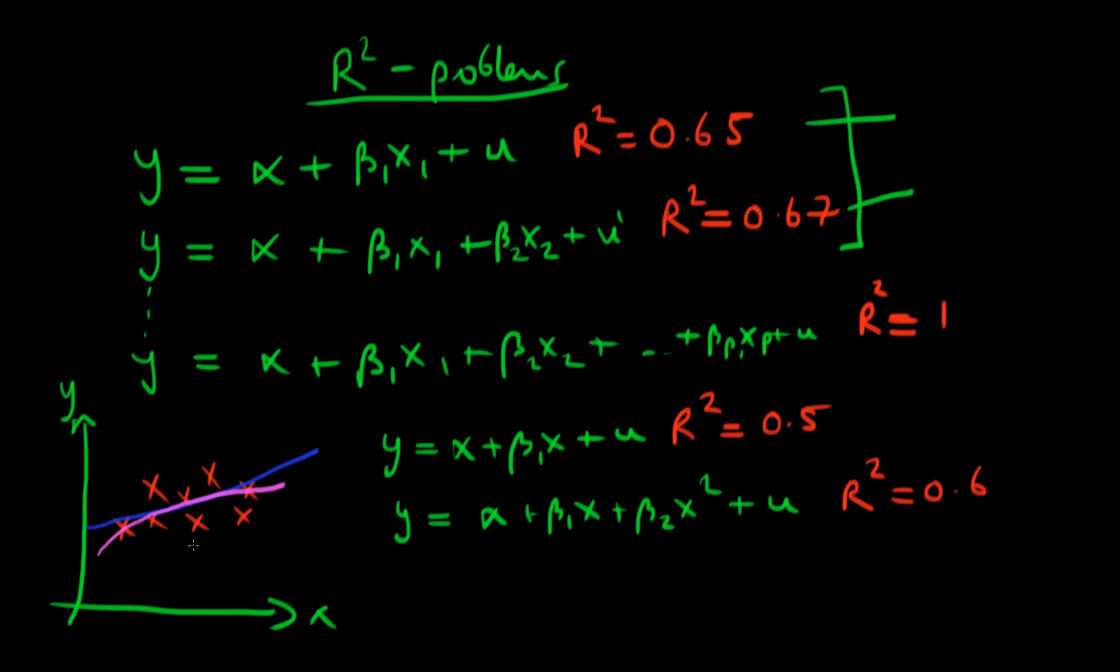So perhaps an X squared model is better on the face of it than our linear model. But the problem is, if I add arbitrarily many powers, until it's actually the case that I have as many powers of X as I do data points, so I continue all the way up to beta P times X to the power P, then my model, even though it's complete and utter garbage, will go through all of my data points.